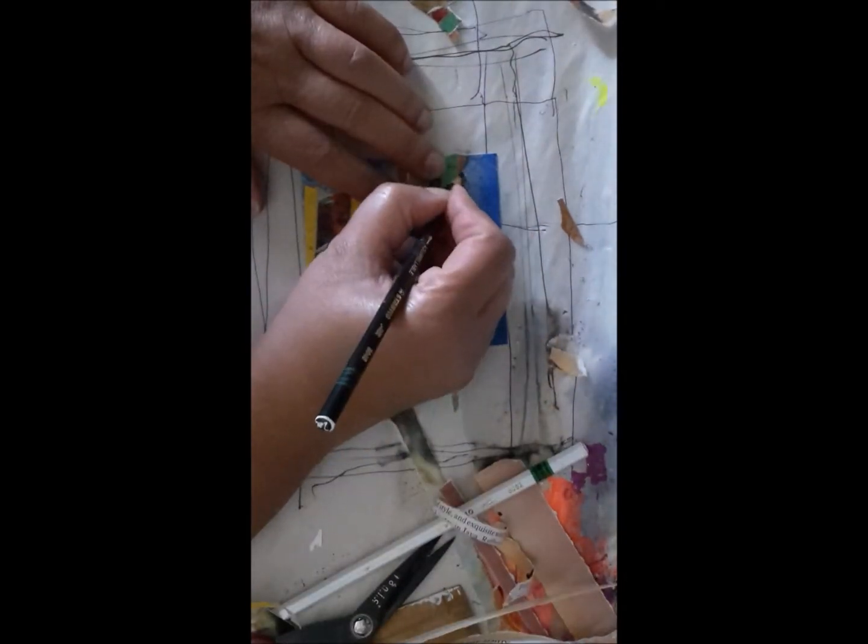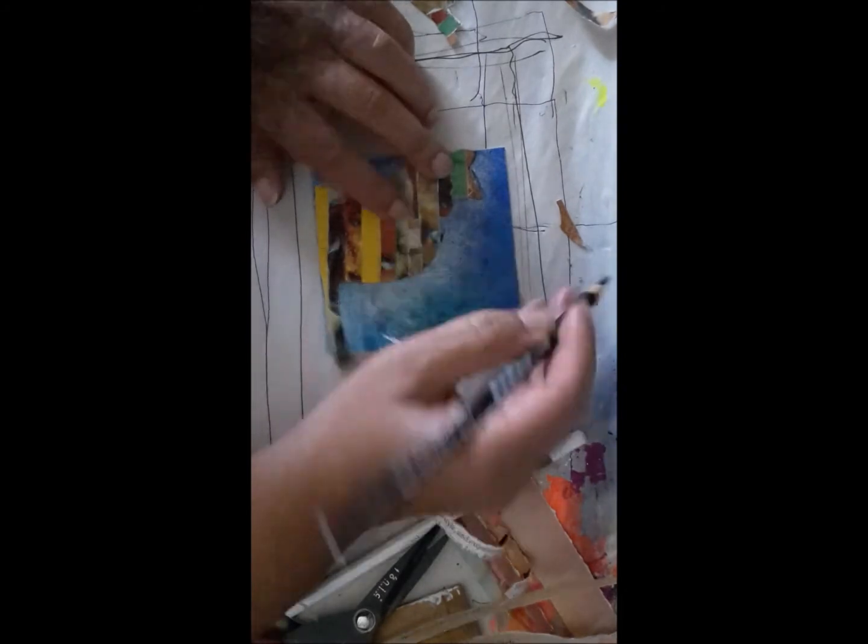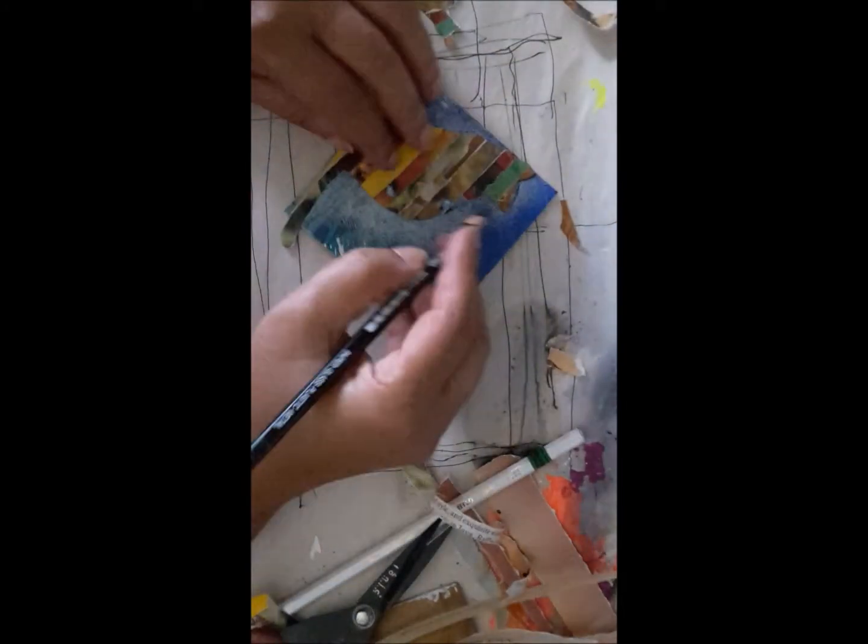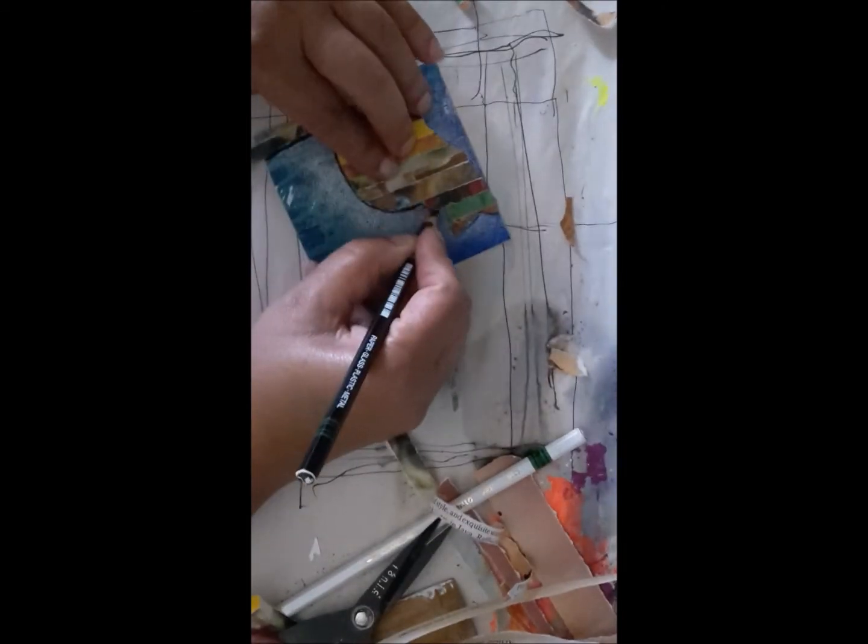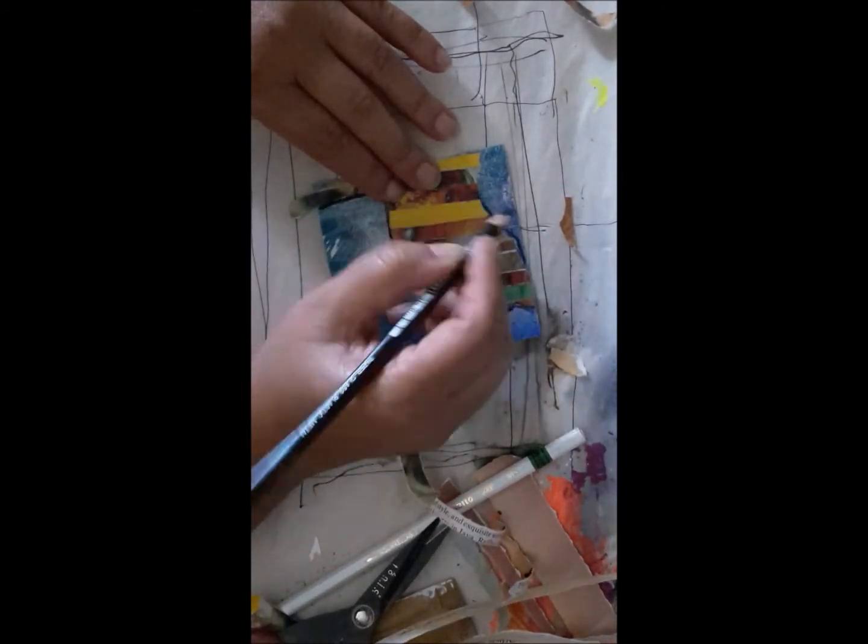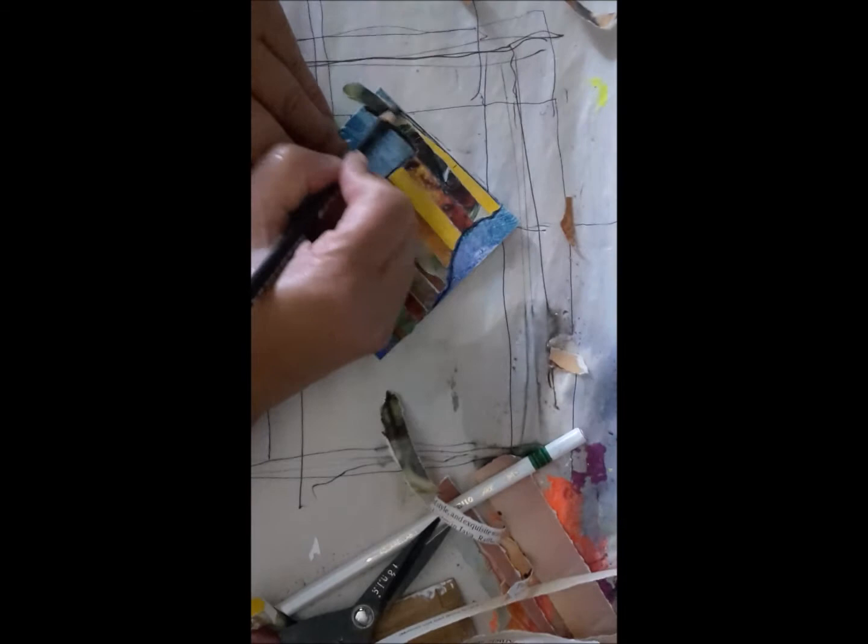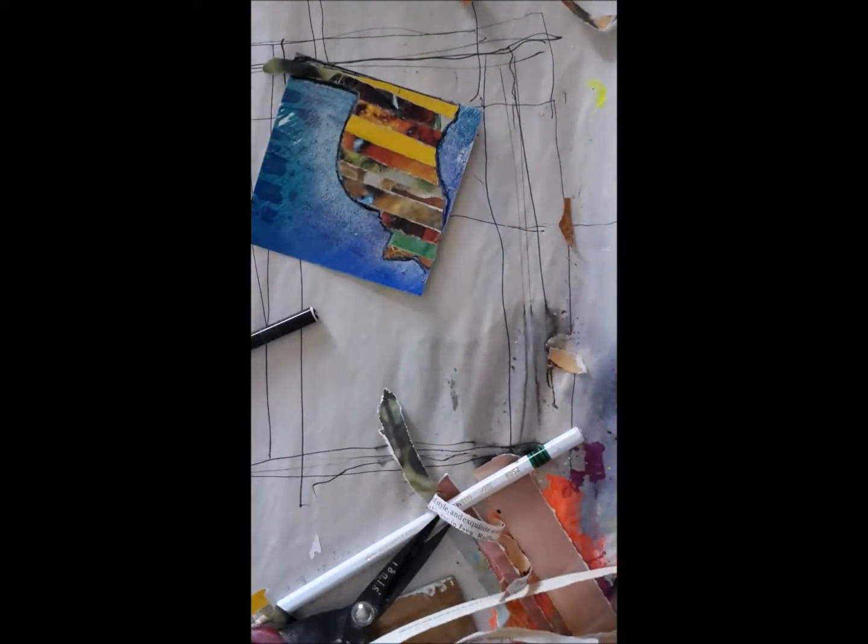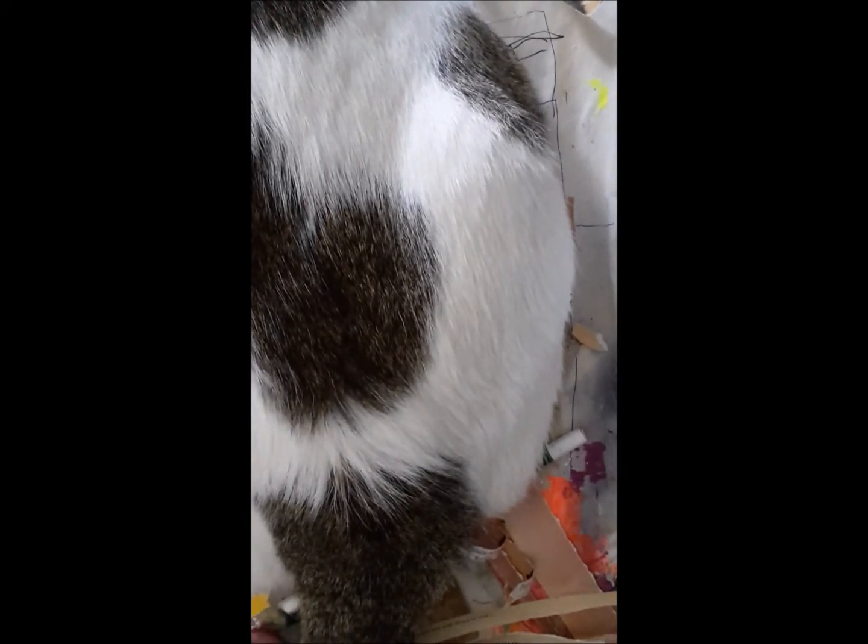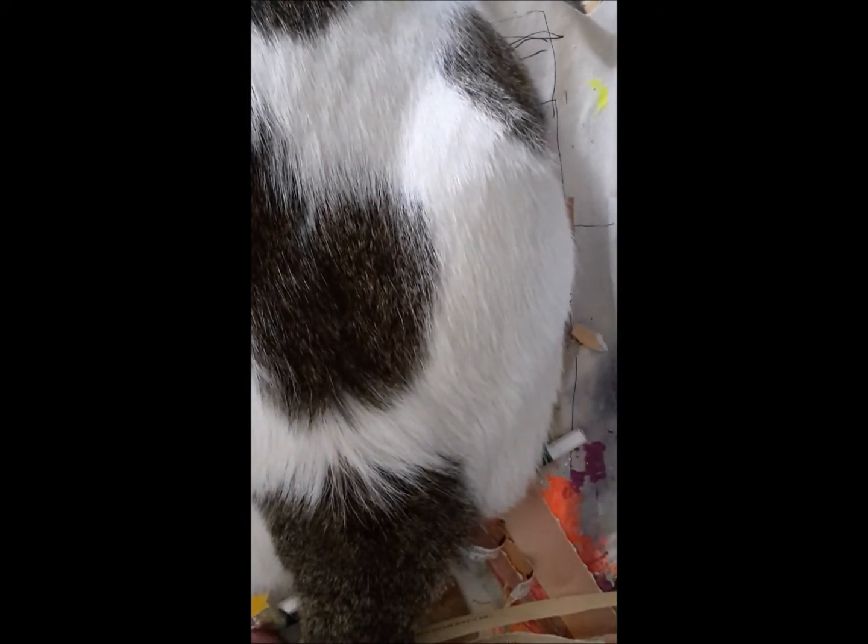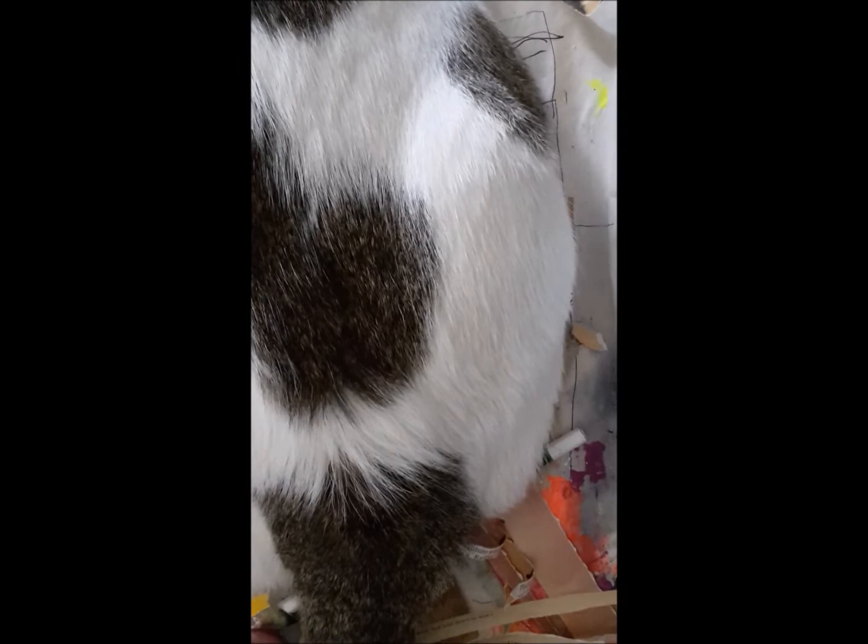And I use black Stabilo all around the silhouette of the cat just to make it pop up more, and then I put the whole thing on a card. And here is Jim Jam again, and she's saying, 'Mommy, you already have a cat, why are you making a cat? I'll sit on it.'